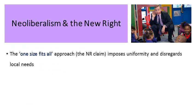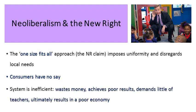Neoliberals and the new right would argue that the one-size-fits-all approach imposes uniformity and disregards local needs. The way education works now with the national curriculum, teaching the same subjects and topics to all students irrespective of where they are in the UK, may be problematic. They would also say that consumers — using the language of business to refer to parents and children — have no say. They would say the system is inefficient, wastes money, achieves poor results, and demands little of teachers, ultimately resulting in a poor economy.